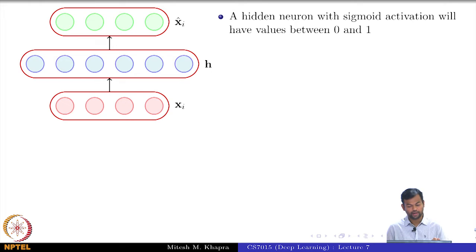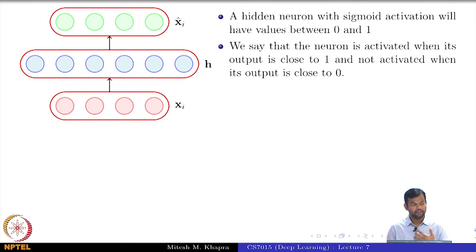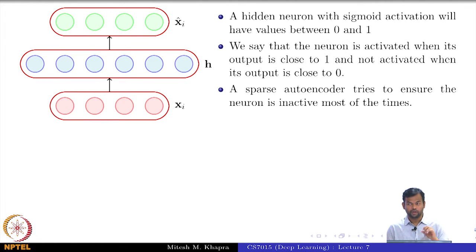A hidden neuron with sigmoid activation will have values between 0 and 1. We say that the neuron is activated when its output is close to 1 and not activated when its output is close to 0. Now, a sparse autoencoder tries to ensure the neuron is inactive most of the times.